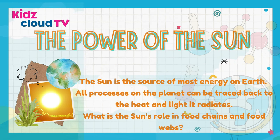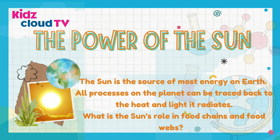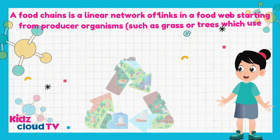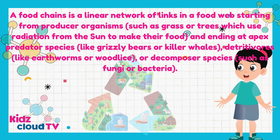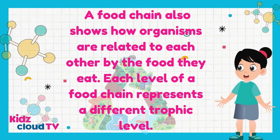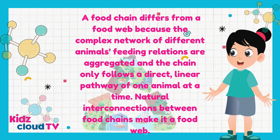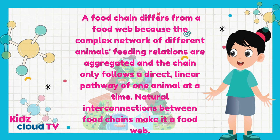The power of the sun: the sun is the source of most energy on Earth, and all processes on the planet can be traced back to the heat and light it radiates. A food chain is a linear network of links starting from producer organisms such as grass or trees, which use radiation from the sun to make their food, ending at apex predator species like grizzly bears or killer whales, detritivores like earthworms or woodlice, or decomposer species such as fungi or bacteria. A food chain also shows how organisms are related to each other by the food they eat, with each level representing a different trophic level. Natural interconnections between food chains make it a food web.